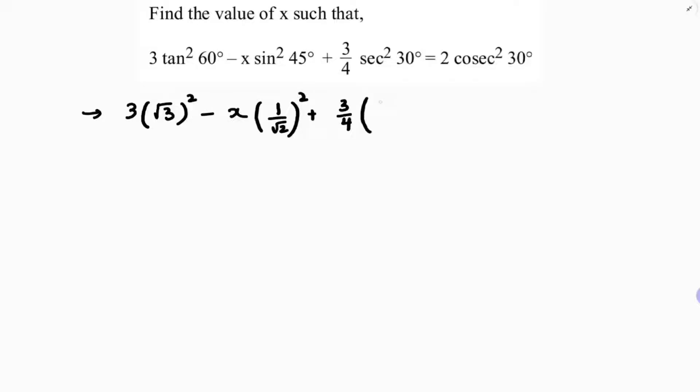Sec 30°: cos 30° is √3/2, so sec 30° is 2/√3, so (2/√3)². Equals cosec 30°: sin 30° is 1/2, so cosec 30° is 2 because they are reciprocal.